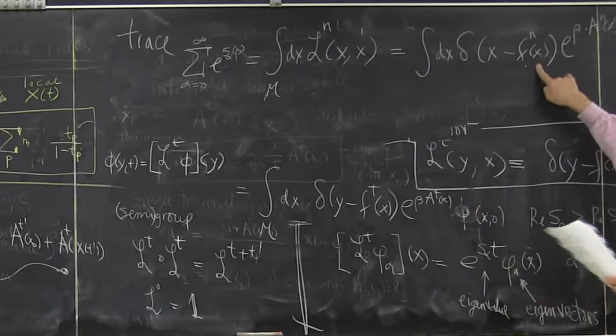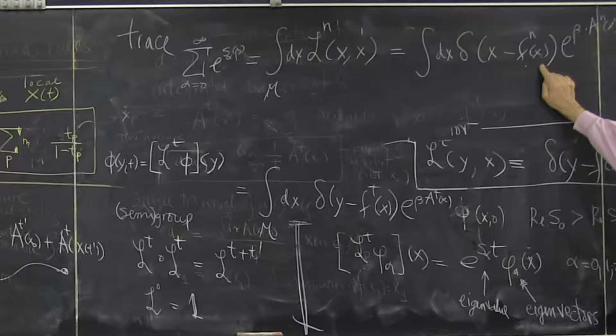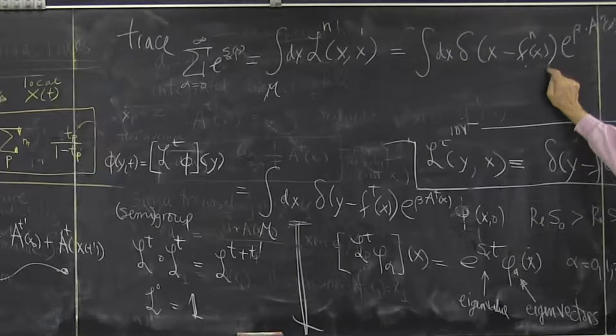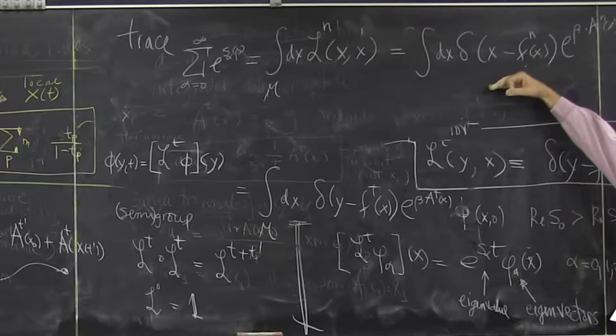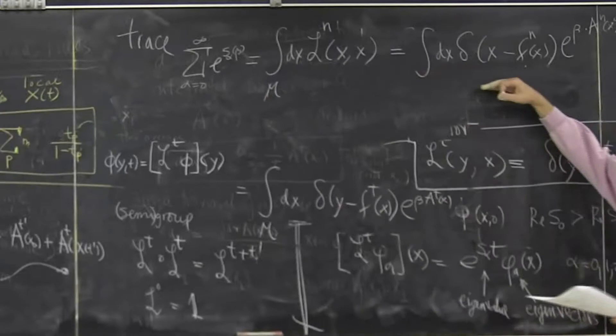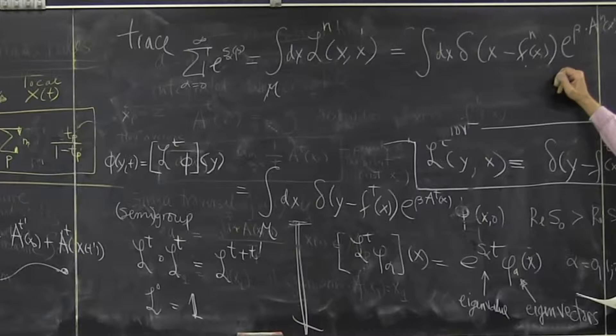This will get a contribution only in the neighborhood of a periodic point. Because that's the definition of a periodic point. So this is the reason, you know, I don't care about periodic orbits. They're difficult to compute. But now we are forced to compute them. Because we care about the spectrum. But the formula says the way you get the spectrum is to compute periodic orbits. So that's how we got to periodic orbits.